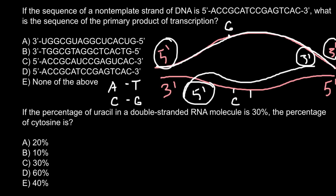Whenever we have adenine on one strand, the complementary strand of the DNA has thymine. Here on the message RNA, because mRNA is complementary to the template strand of the DNA, we would have G paired with C. And instead of thymine, we would have uracil, because in message RNA, thymine is substituted with uracil. But the rest of the coding would be the same in the message RNA as in the non-template strand of the DNA.